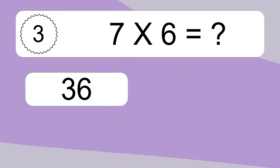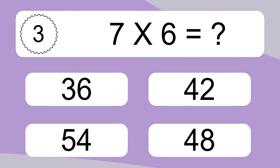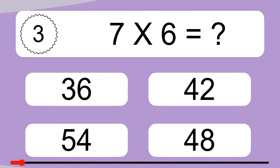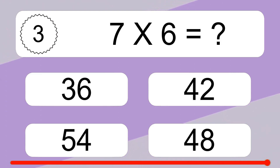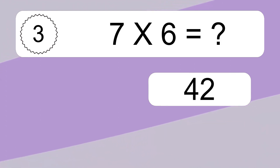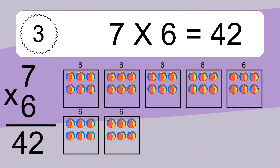7 times 6 equals what? 7 times 6 equals 42.